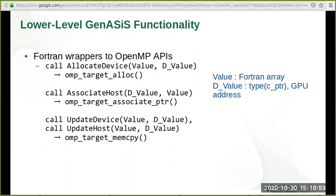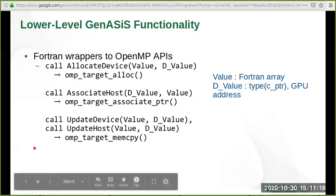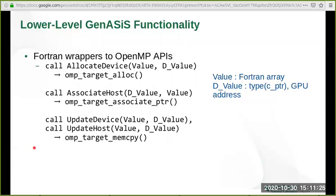The subroutine allocate_device is our Fortran wrapper to OMP_target_alloc which allocates memory on the GPU. The subroutine associate_host is a wrapper to OMP_target_associate_pointer which causes references to a Fortran array value appearing in appropriate OpenMP directives to be interpreted as referring to the device memory. Update_device and update_host are our data transfer wrappers to OMP_target_memcpy. This subroutine lets us have affirmative control of data movement with persistent memory allocation on the device.